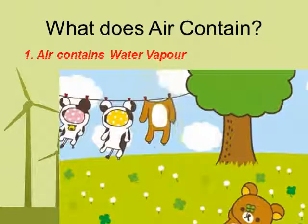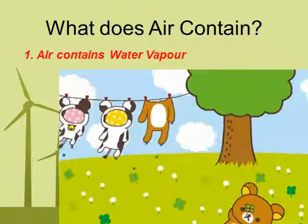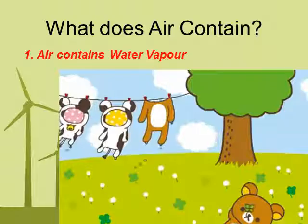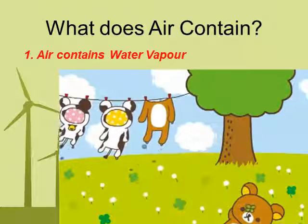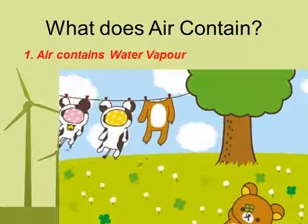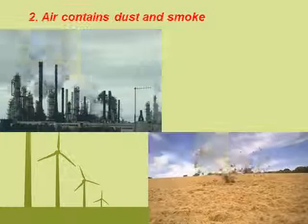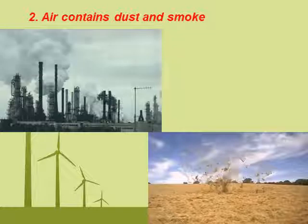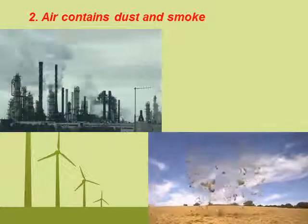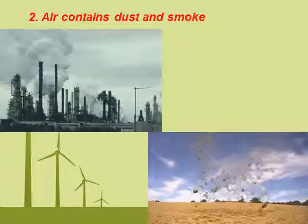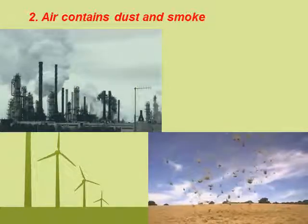What does air contain? Wet clothes, when kept under the sun, become dry after some time. The heat of the sun changes the water present in these clothes into water vapor, which mixes with the air around. Thus, we can say air contains water vapor. Air also contains dust and smoke. Smoke is given off when something burns and also comes out of vehicles and factories, mixing with the air around us.